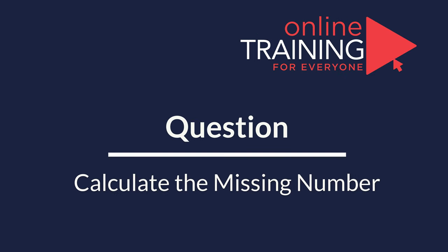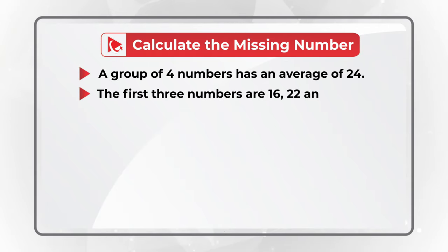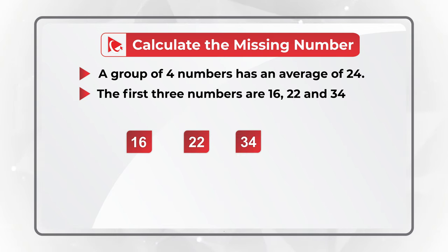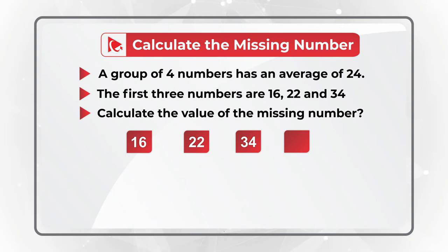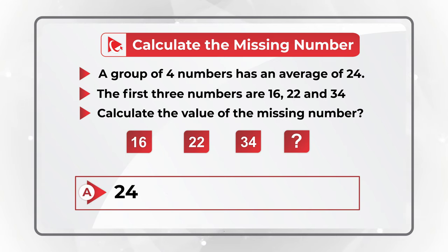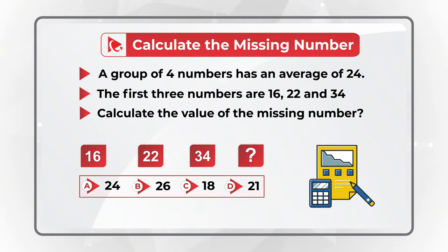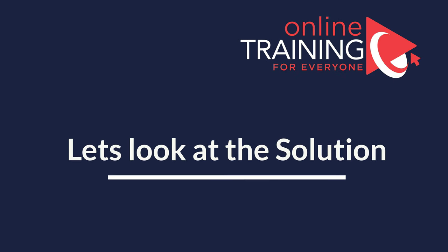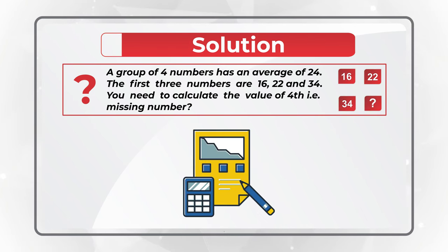Here's one of my favorite mental math questions. A group of four numbers has an average of 24. The first three numbers are 16, 22, and 34. You need to calculate the missing fourth number. Choices: A) 24, B) 26, C) 18, or D) 21.